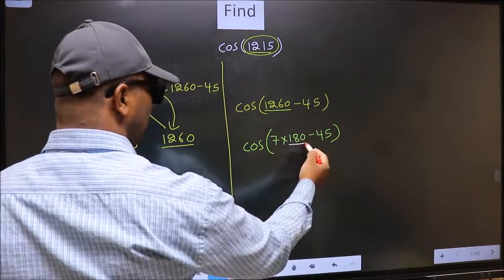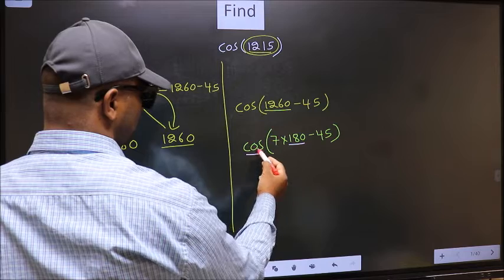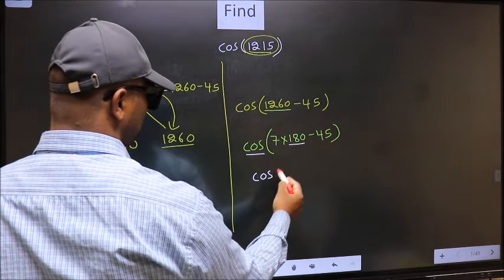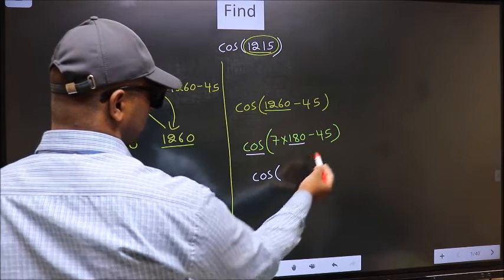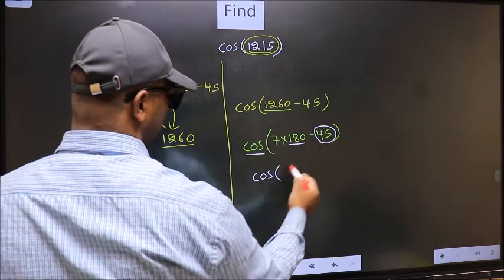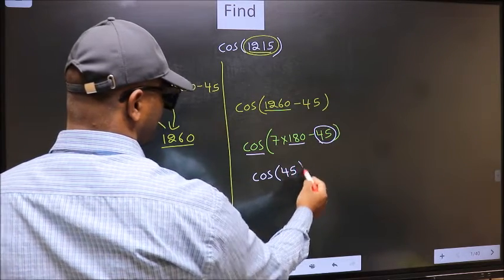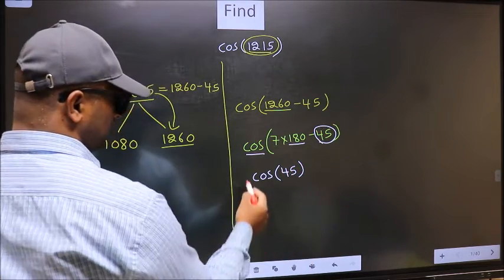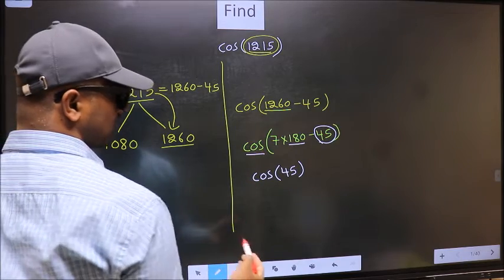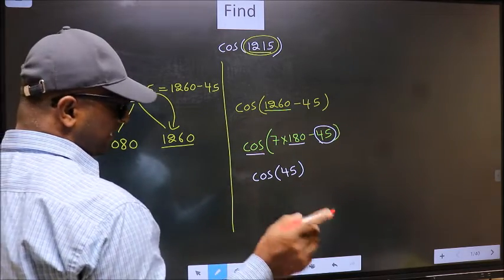Here we have 180, so cos is not going to change. It will remain cos and inside we get this angle 45. Now the question is, will we get here plus or minus?